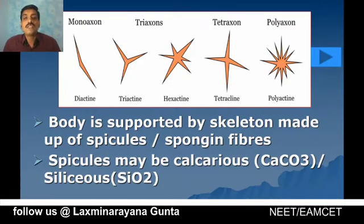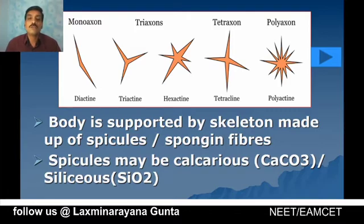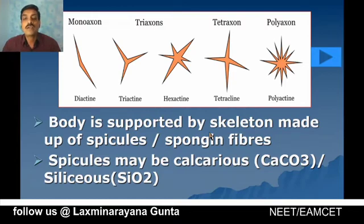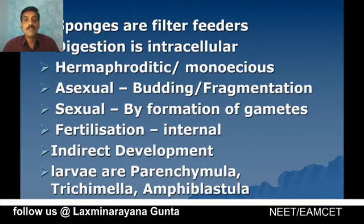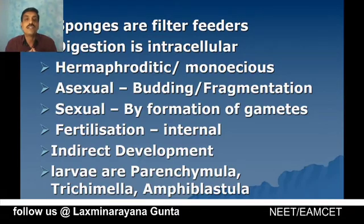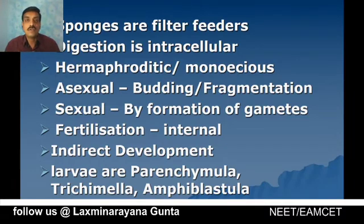The body of sponges is supported by a skeleton made up of spicules or spongin fibers, or sometimes both. Spicules may be calcareous — made of calcium carbonate — or siliceous — made of silicon dioxide (SiO₂). Sponges are filter feeders, meaning they feed by straining food particles and suspended matter from the water. Digestion is intracellular, meaning digestion takes place within the cell, unlike in humans where digestion is extracellular.